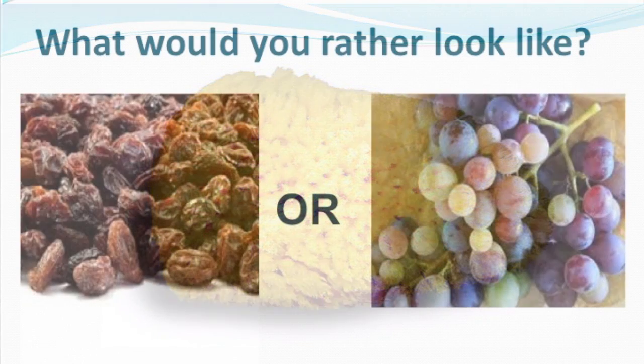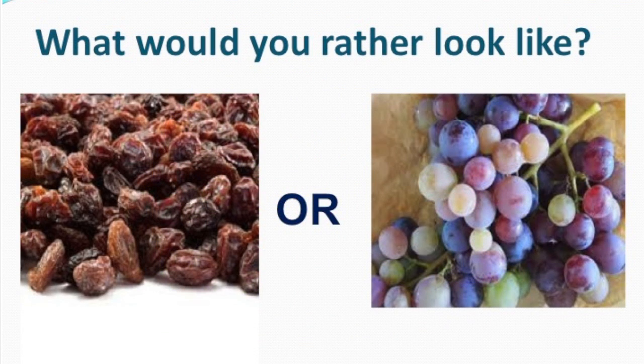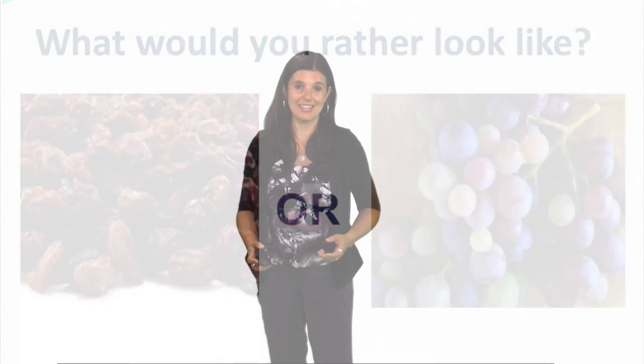So we've got a slide here showing the difference between some raisins and some grapes. If you are not getting essential nutrients, your body will start to age prematurely and break down. And you will shrivel up and look like a dried old raisin. But with the proper hydration and nutrition, your body has the ability to stay ripe and fresh and healthy and youthful for a much longer period of time.